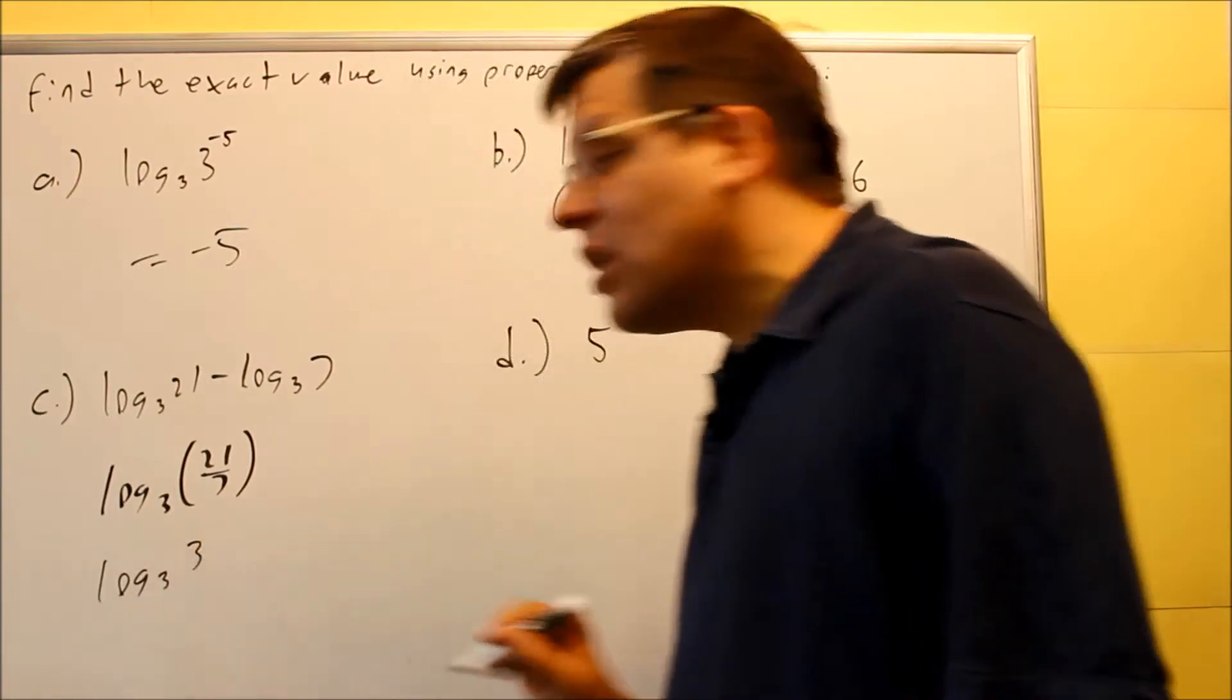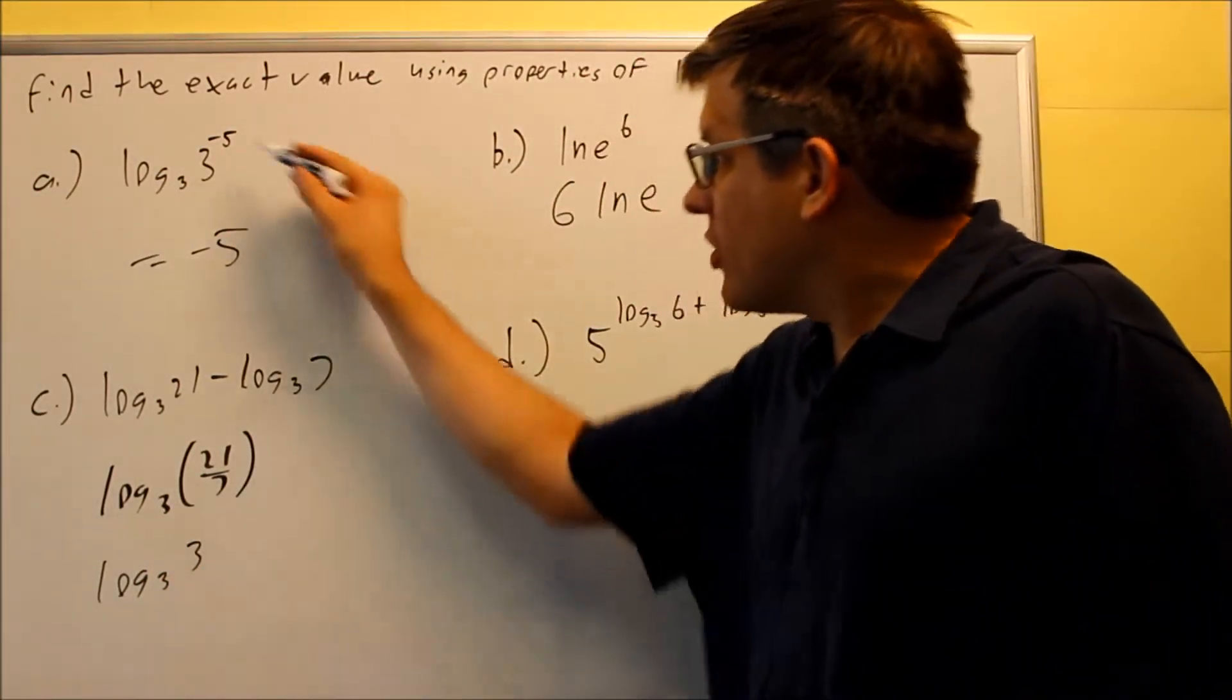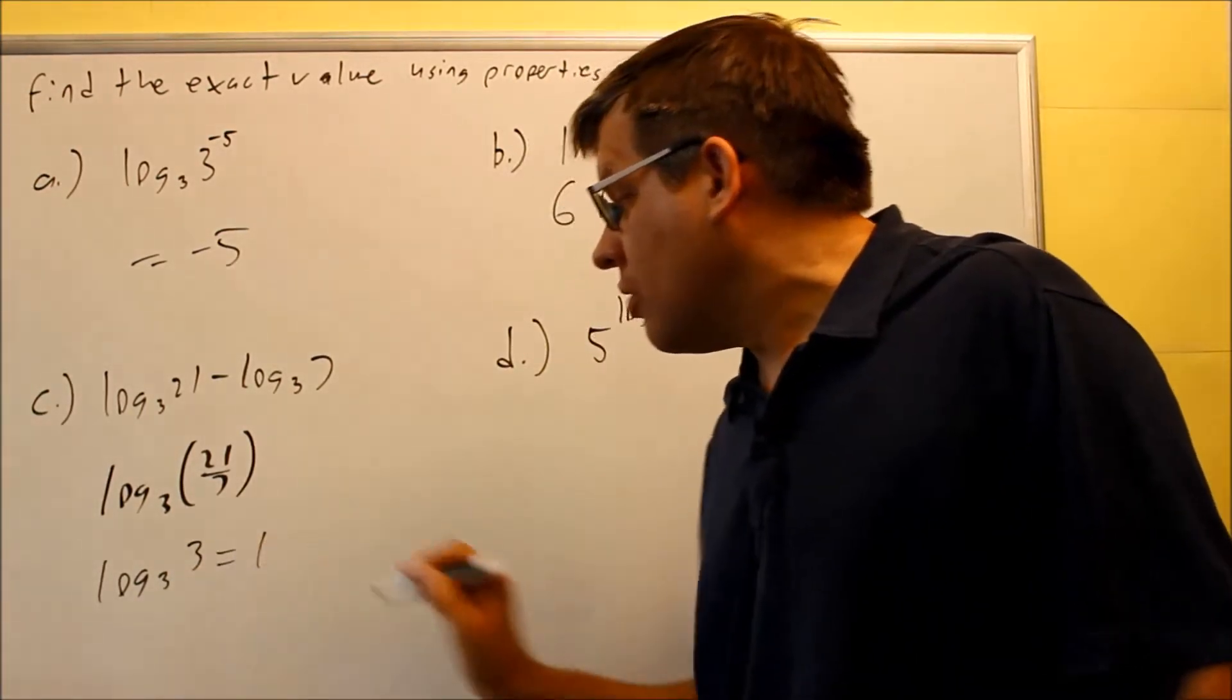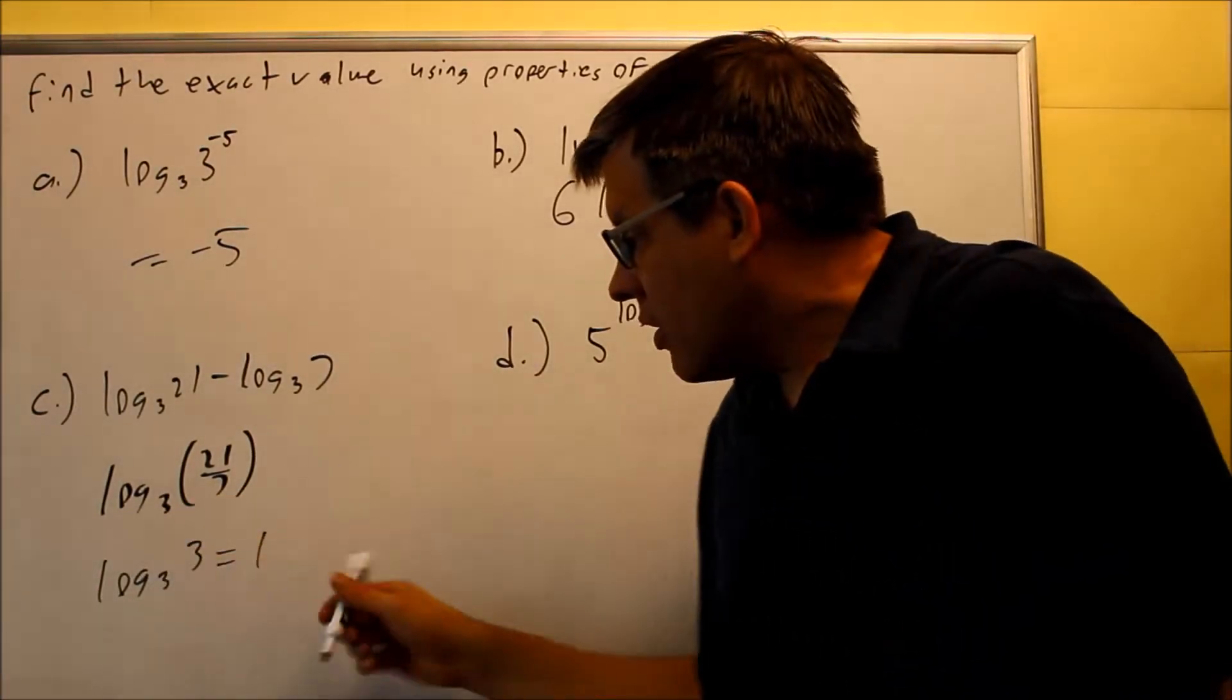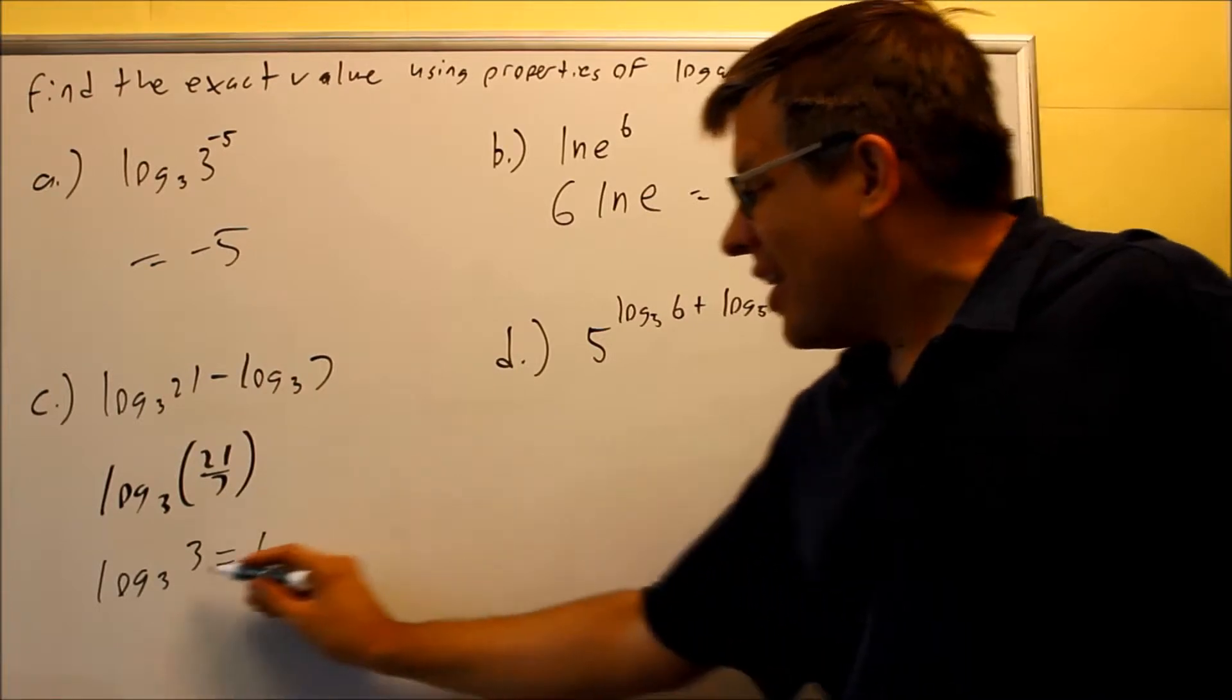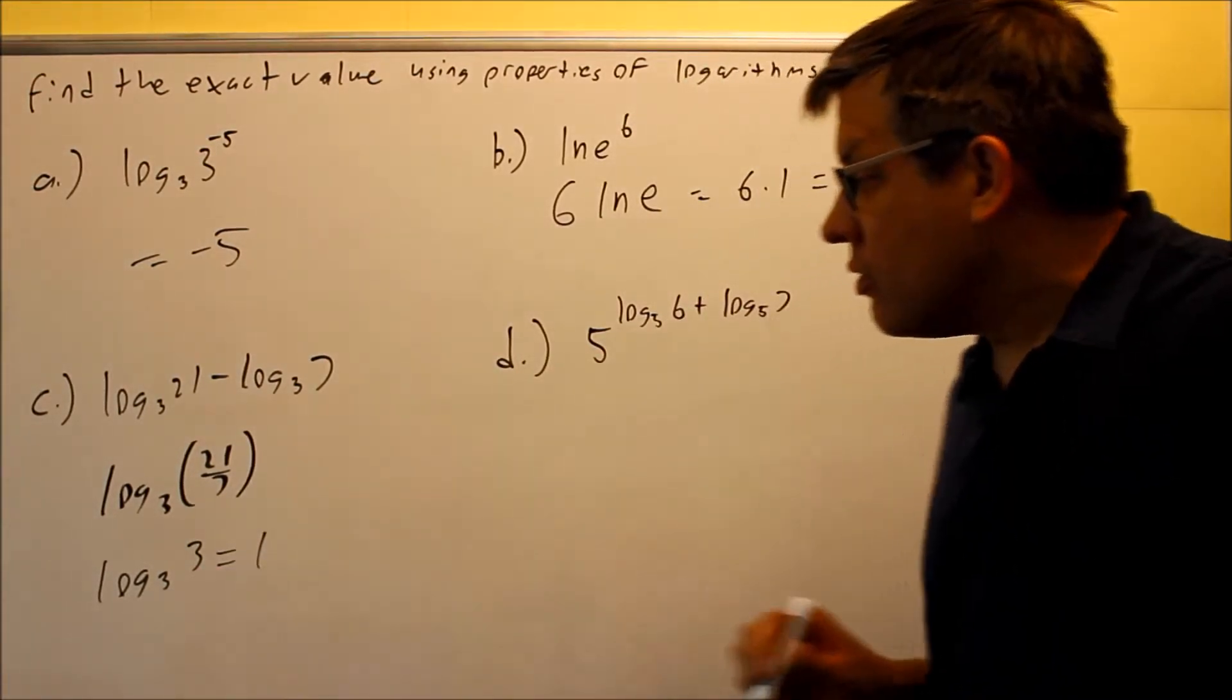21 over 7 gives us log 3 of 3. That right there is going to be equal to 1. That's really using rule number 2, where you have these two are the same. That's saying 3 to the 1 is equal to 3, that's why that rule works.